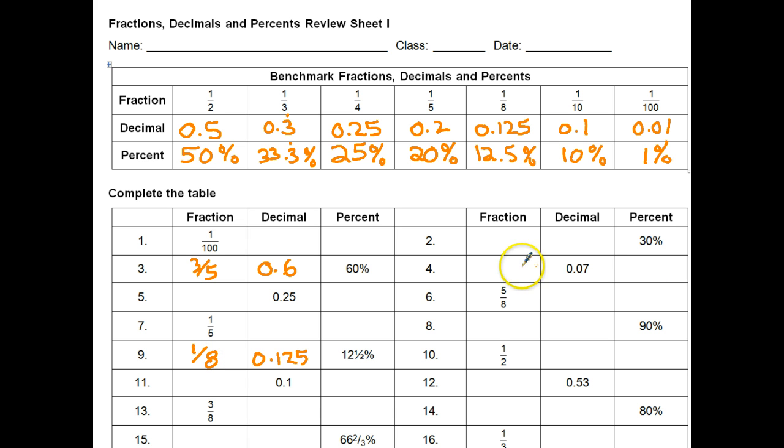Okay, if you have ones like 0.07, well that's just seven-hundredths, so that is seven percent. And as a fraction, that's going to be just seven over a hundred.